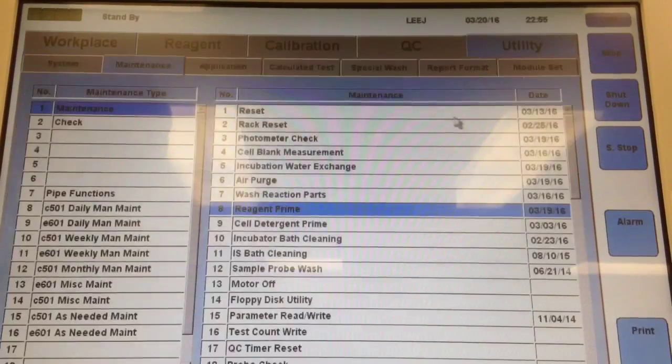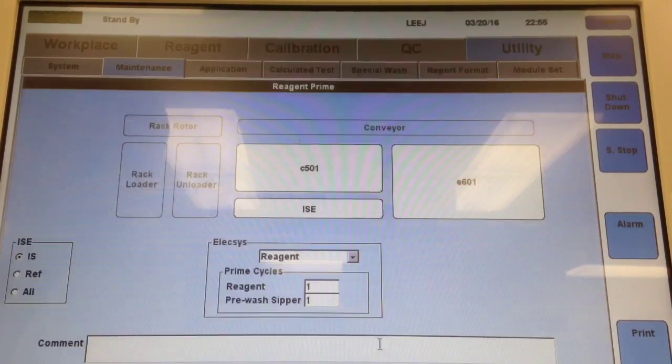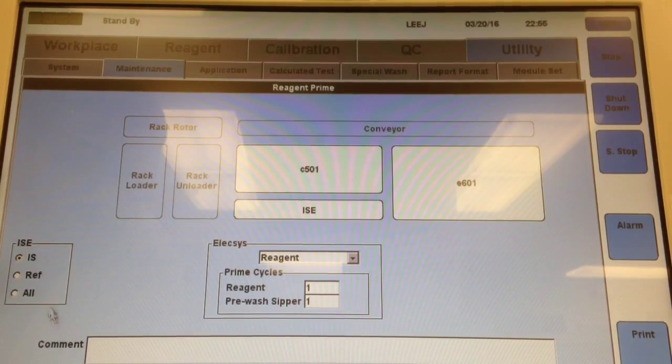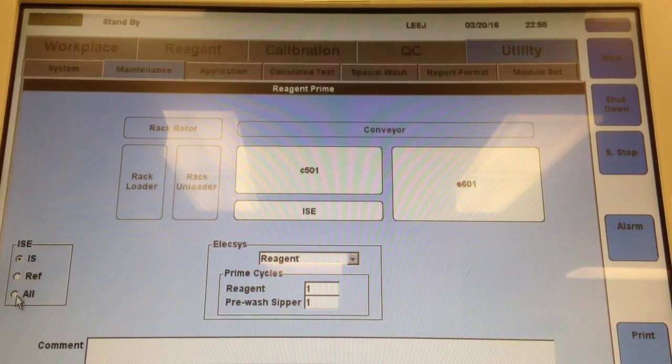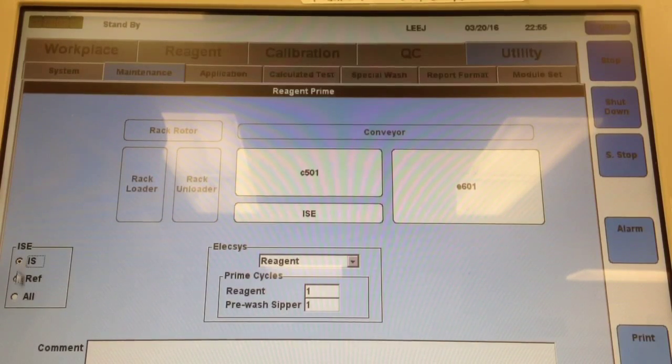Starting in Workplace, go to Utility, then Maintenance, and select Reagent Prime. You could do it a couple times if you wanted to, but I'm just going to do it once, which should be enough paired with the other things I'm going to do.